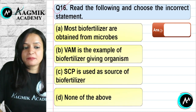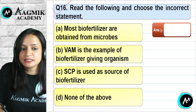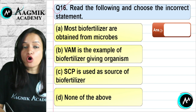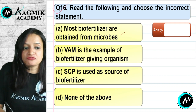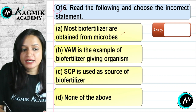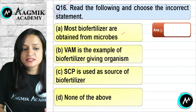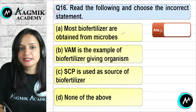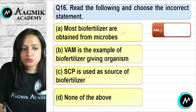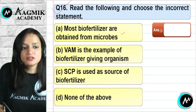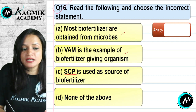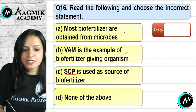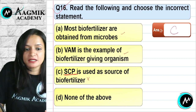Question number 16: Read and choose the incorrect statement. Most biofertilizers are obtained from microbes — correct. VAM (vesicular arbuscular mycorrhiza) is an example of a biofertilizer-giving organism that provides nutrition, drought resistance, and root disease resistance — correct. Single cell protein (SCP) used as a source of biofertilizer is incorrect. So the correct option is C.